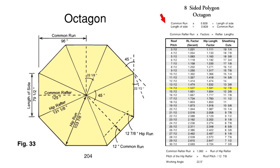The great thing about this chart, and all of the polygon charts in Rooframers Bible, is that it uses factors — basically a one-number method. So whatever value you have, you multiply by a single number or factor to get the value that you need. Quick and easy. You don't have to do a big long string of mathematical calculations with trigonometry. You simply take what you have, multiply it by the one-number factor, and it gives you what you need. In the chart, we've got all the information needed to frame any octagon from a 3/12 all the way up to a 30/12.